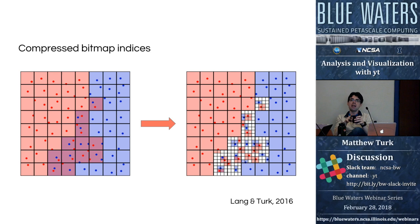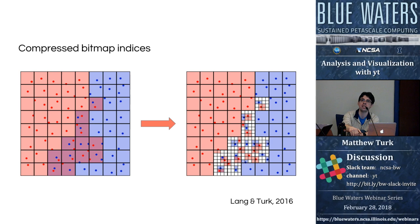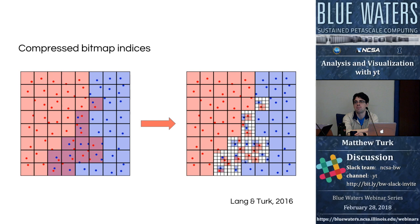By utilizing the EWAH library from Dan Lemire — the Enhanced Word-Aligned Hybrid system for compression — we can actually do logical operations without decompressing our bitmap indices. So if we generate a selector, we can identify which bitmap indices it overlaps with, store compressed bitmap indices for all individual files, and then without decompressing either one, do logical operations to identify what needs to be read from disk to fill a given spatial selector.